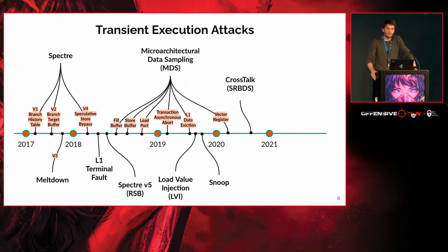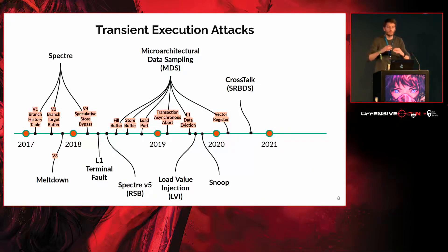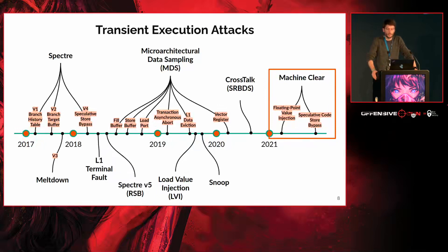Starting in early 2018 with Spectre and Meltdown, then L1 Terminal Fault, then in 2019 the big class of microarchitectural data sampling with many variants leaking from different buffers. We also had the first injection attacks — load value injection — and even the CrossTalk attack, which broke the barrier of a single core, working even among physically different cores. Now in this talk, we present the newest transient execution attacks based on machine clear: Floating Point Value Injection and Speculative Code Store Bypass.